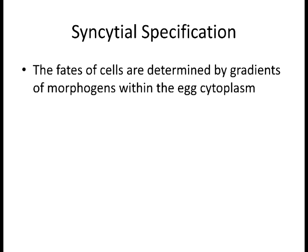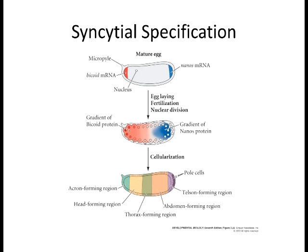Syncytial specification is found primarily in insects, with Drosophila as the prime example. The main difference from autonomous specification is that you still have cytoplasmic determinants—morphogens or proteins made from sequestered RNA. The cell goes through multiple stages of mitosis but not cytokinesis, generating many nuclei before cytokinesis occurs. Morphogenic gradients are being set up so that when the cell partitions into smaller cells, the gradients become encapsulated within individual cells.